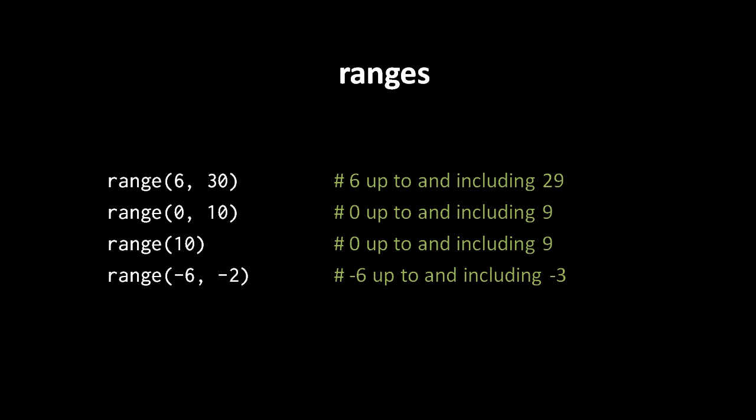In the third example, we provide just one argument, so the starting position is assumed by default to be 0. So this is the range from 0 up to and including 9. And our last example, range(-6, -2), is a range that starts at negative 6 and goes up to and includes negative 3 — again, one less than the second argument.